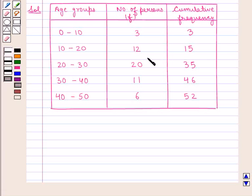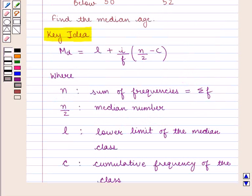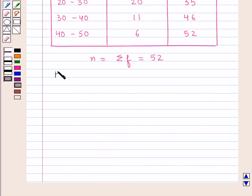The sum of all the frequencies, that is summation of f, is equal to 52. We know that n equals summation of f, which is 52. And we know the median number is equal to n/2. So the median number is equal to 52 upon 2, which is equal to 26.